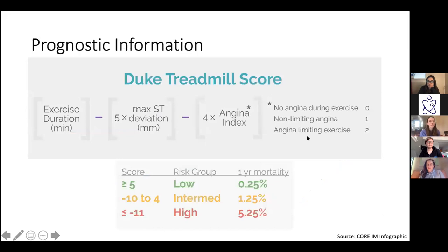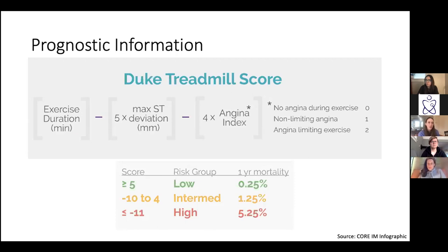This is the Duke treadmill score, which gives prognostic information from a stress test result. It takes into account how long they exercised and whether they had ST segment deviation or angina during the test. A more negative number is a higher risk group; a more positive number is lower risk, and there's mortality data that comes from this. You can tell someone definitively that if they're in the super low-risk category, their likelihood of a cardiovascular mortality event is less than 1%. That can be really helpful in counseling patients based on their results.